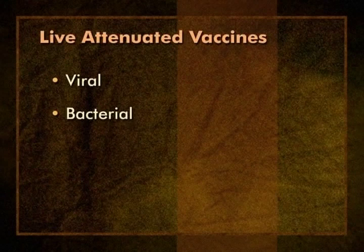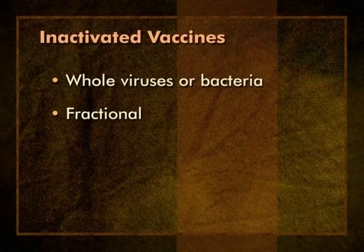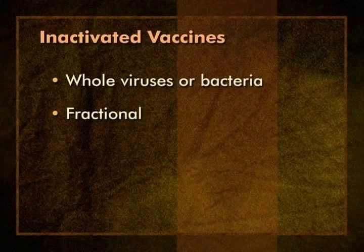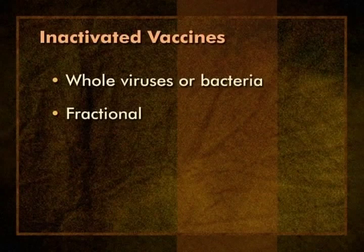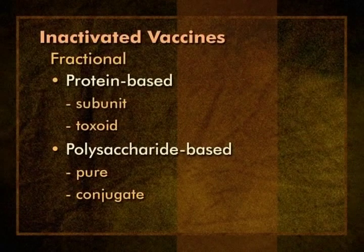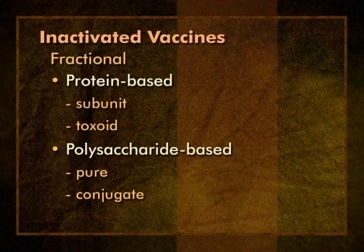Among live attenuated vaccines, live viral vaccines predominate. There are two live bacterial vaccines, but these are not commonly used in the U.S. There are two main groups of inactivated vaccines: those that contain inactivated whole viruses or bacteria, and a second large group referred to as fractional vaccines. These vaccines contain only immunogenic pieces or fragments of the organism of interest. Among the fractional vaccines, most are protein-based, such as subunit vaccines and toxoids. Some fractional vaccines are polysaccharide-based and may be either pure polysaccharide or conjugate polysaccharide.